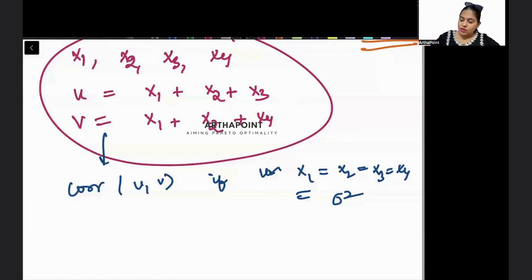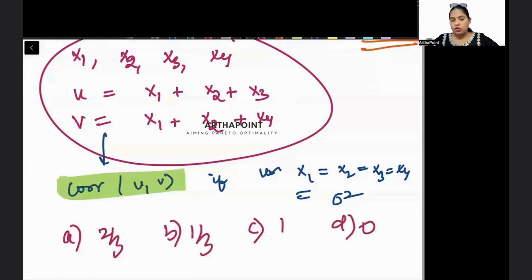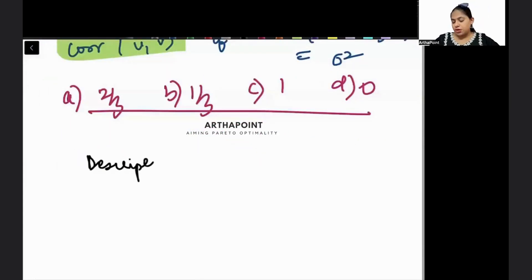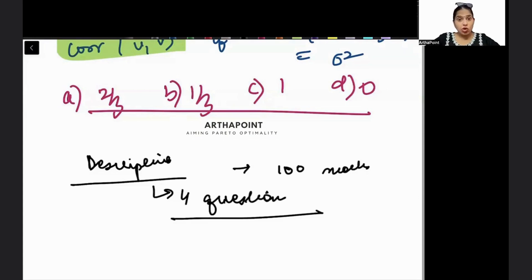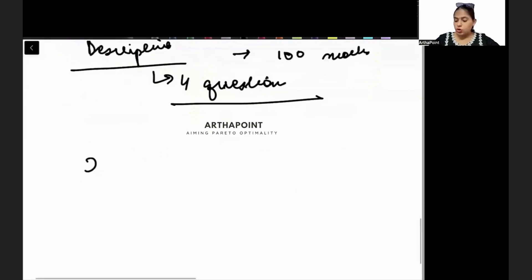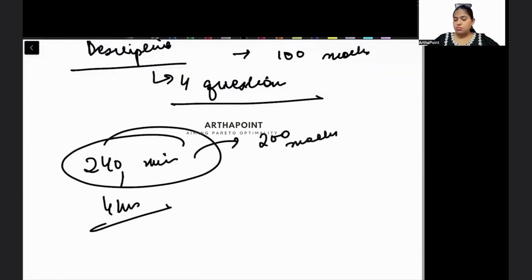These are questions based on micro, macro, stats, econometrics, and maths syllabus. Today I want to help you understand the exam pattern. You will be asked to find the correlation between U and V and you will be given four options: two by three, one by three, one, zero. These kind of questions can be asked in this exam. Then you will be having a descriptive paper as I have told you - descriptive English paper. Again, 100 marks paper will be there. You will be given four questions, and the aim will be to check whether you have good enough writing skills and grammatical control. In total, you are given 240 minutes - four hours - to do a paper of 200 marks. This is about Phase 1.